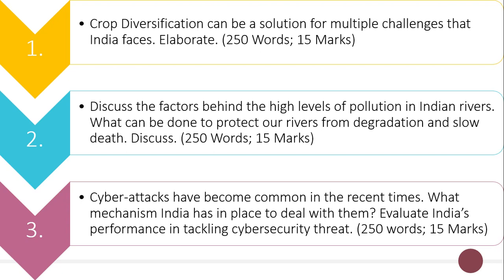The second question is: 'Discuss the factors behind the high level of pollution in Indian rivers. What can be done to protect our rivers from degradation and slow death — discuss.' Here you have to discuss the factors responsible for high levels of pollution in Indian rivers and what can be done to protect these rivers. The word limit is 250 and the maximum marks are 15.